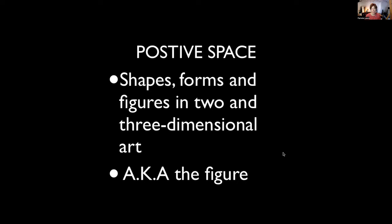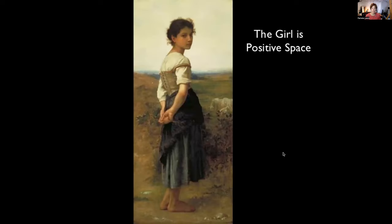The positive space is generally the subject — it's considered to be the subject of a representational painting. So the flower pot, the person, the car, whatever it is a painting of or drawing of. So in this example, the girl is considered the positive space, the subject of the painting.